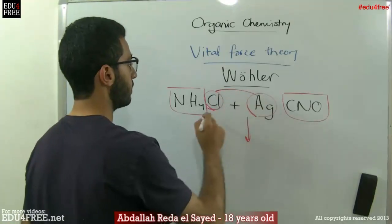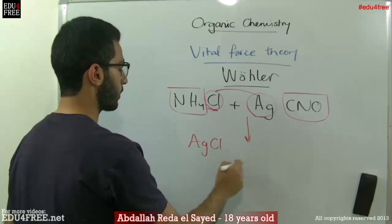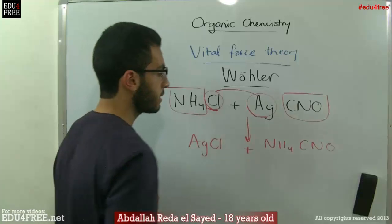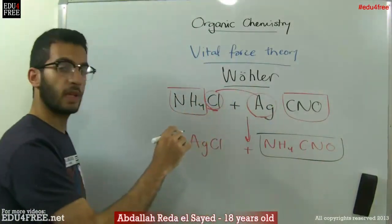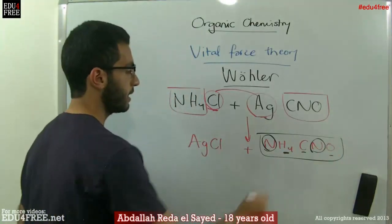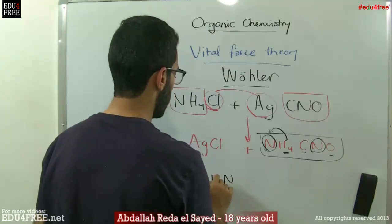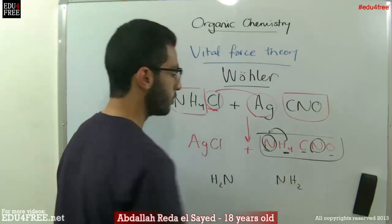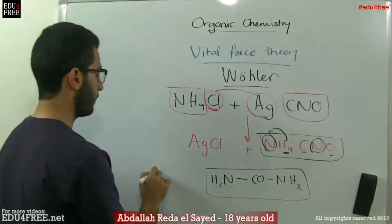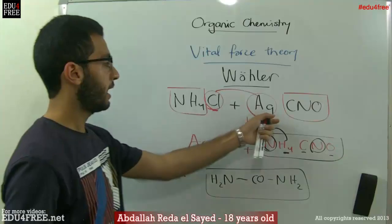What happens is a simple reaction where the ions and anions exchange. The silver takes the chloride, giving silver chloride plus ammonium cyanate (NH4CNO). Then that compound rearranges itself. We have two nitrogens, one carbon, one oxygen, and four hydrogens. One nitrogen takes two hydrogens, the other nitrogen takes the other two hydrogens, and in the middle we have the CO group. This is urea.